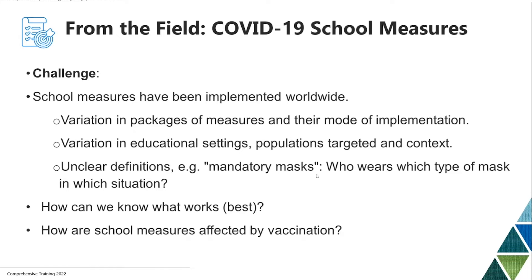Another challenge is the ambiguous definition of different types of measures. What does mandatory mask wearing actually mean? Who wears which type of mask in which situation in the school setting? As a result, we still don't necessarily know what works best. An additional challenge — of particular relevance here — is how school measures are affected by changing levels of vaccination among students, teachers, but also among the wider population.